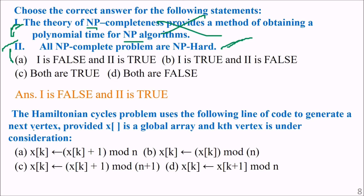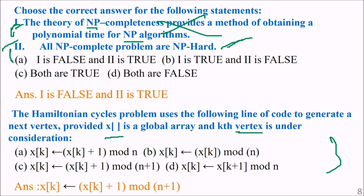The Hamiltonian cycle problem uses the following line of code to generate a new vertex, given that x is a global array and the kth vertex is under consideration. The answer involves taking modulus — x[k+1] mod n plus 1 will be assigned to x[k].